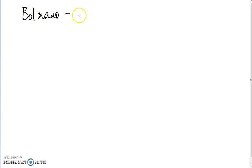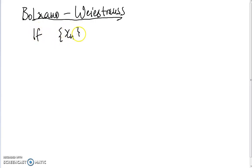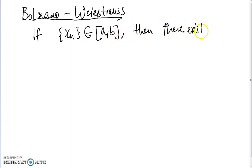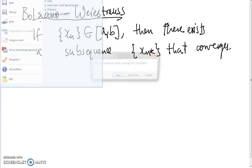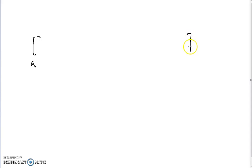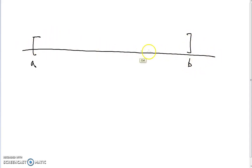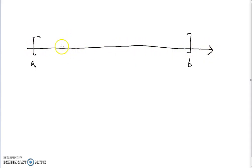Now we'll cover one last thing called the Bolzano-Weierstrass theorem, which basically says: if you have a sequence x_n that is always bounded in [a,b], then there exists a subsequence — call it x_{n*} — that converges. Let's see how to prove this. We start by taking the interval [a,b].